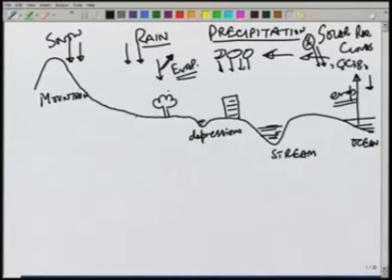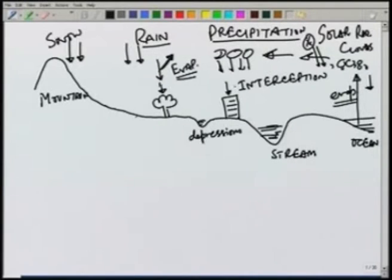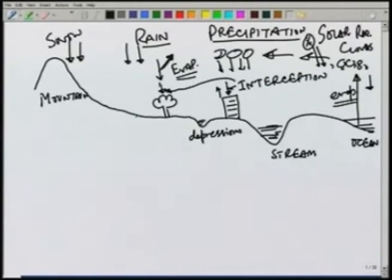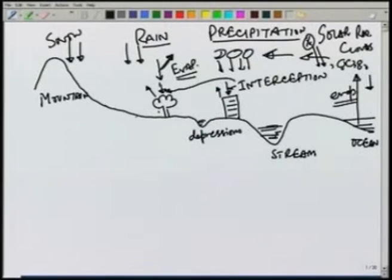The part which reaches the surface, some of it will be intercepted by the buildings and maybe other vegetation. This part will not reach the ground — it will be intercepted before it reaches the ground. From the interception, it may evaporate back to the atmosphere without reaching the ground. Some part of the interception will, of course, fall down to the ground after some time.